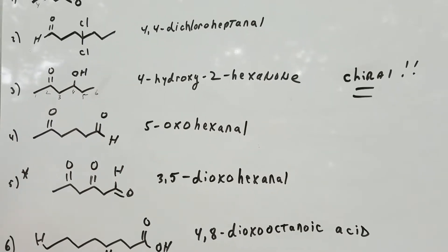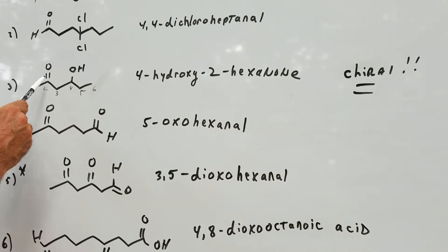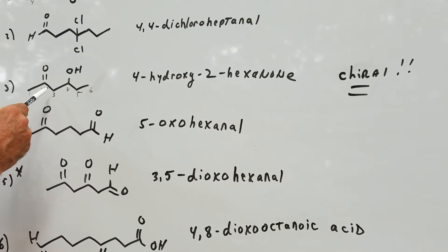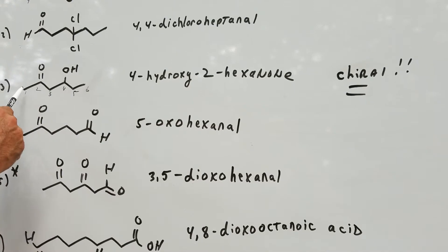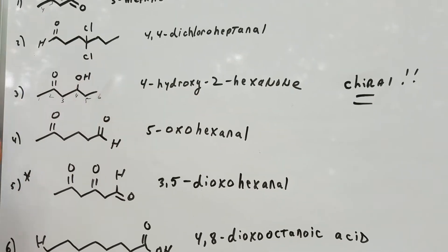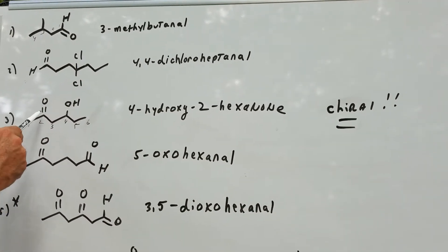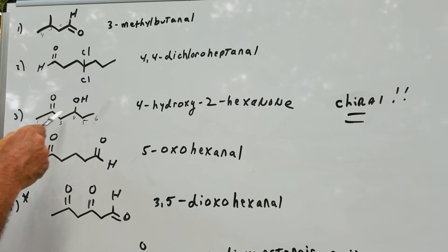So that means the alcohol group is going to be a substituent. So if I number it such as this, I'm going to come up with 4-hydroxy-2-hexanone. When you do ketones, you need a number because if the double bond O was here, then it would be a 3-hexanone.